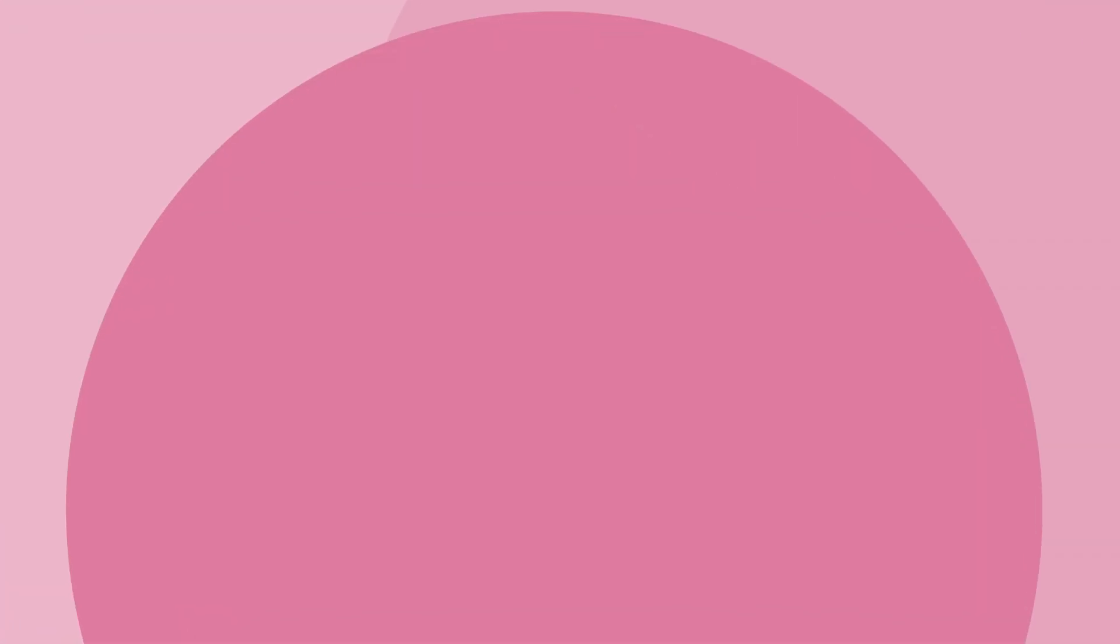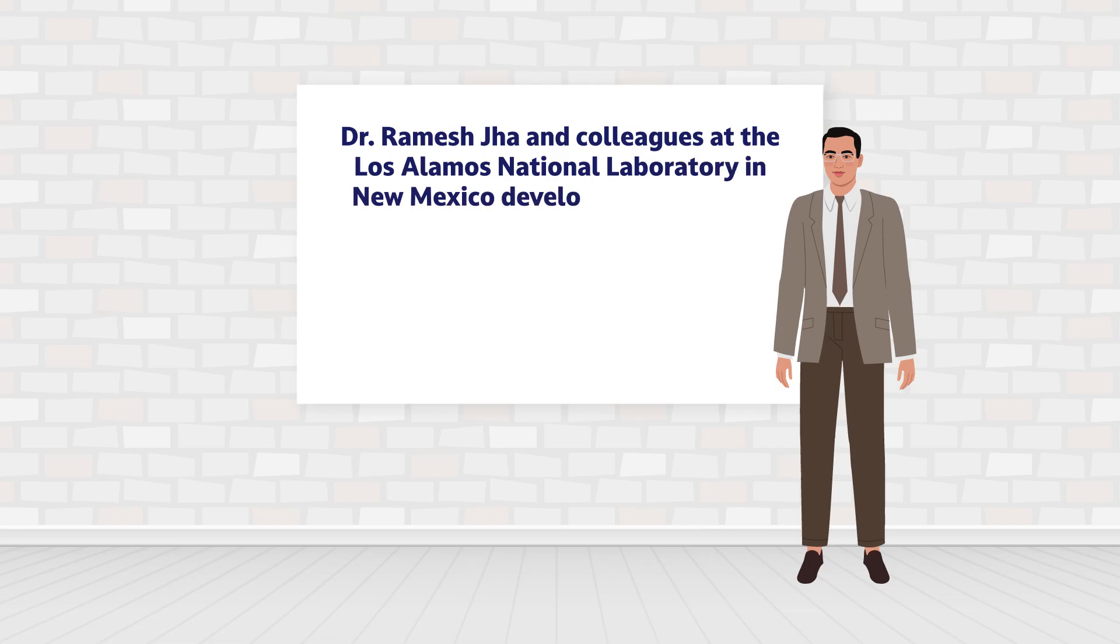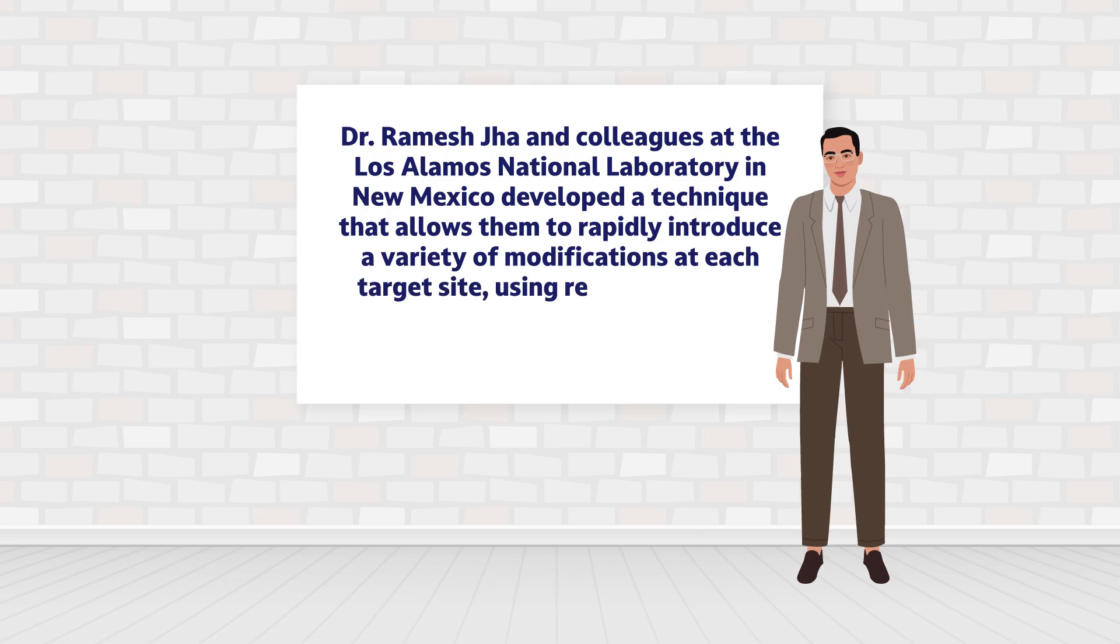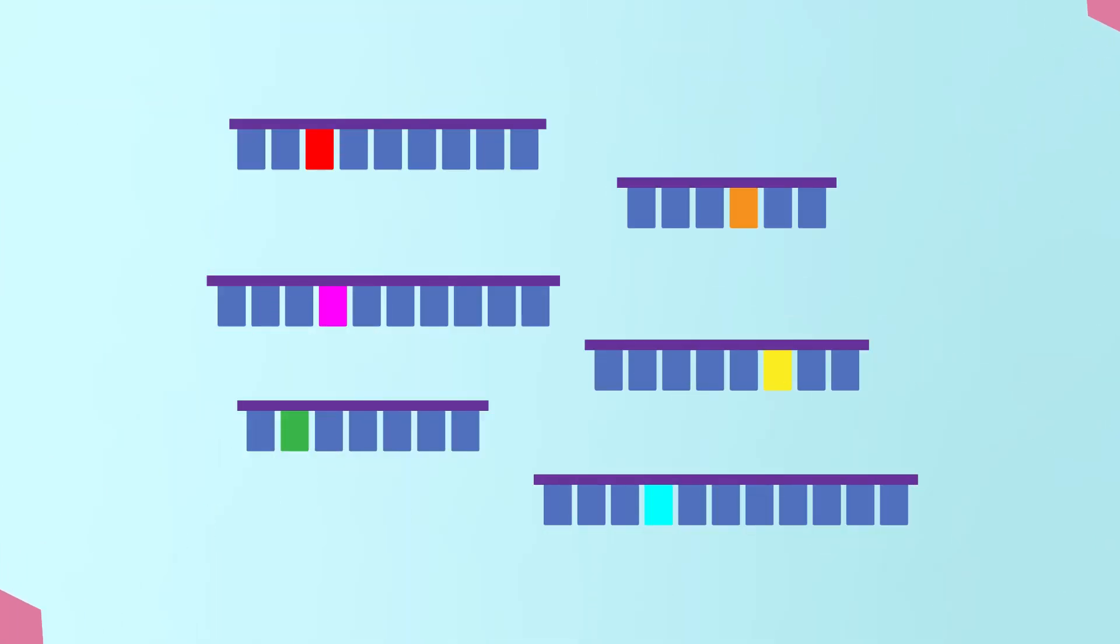Towards this aim, Dr. Ramesh Jha and colleagues at the Los Alamos National Laboratory in New Mexico developed a technique that allows them to rapidly introduce a variety of modifications at each target site using relatively simple laboratory techniques such as polymerase chain reaction or PCR. By using PCR primers with variable bases at certain positions, they can quickly generate gene fragments that carry one or more modifications of interest.